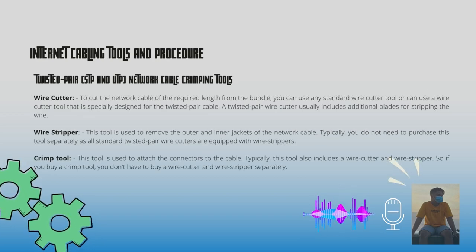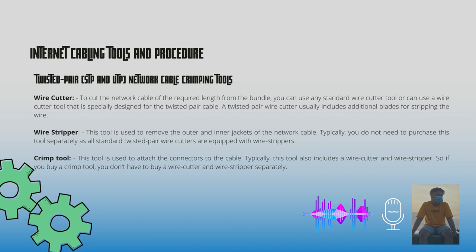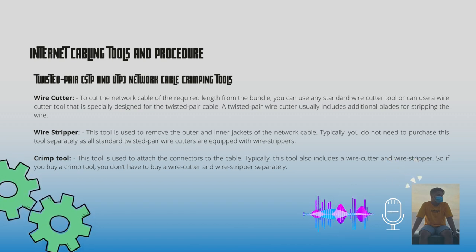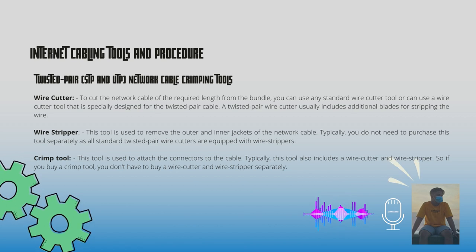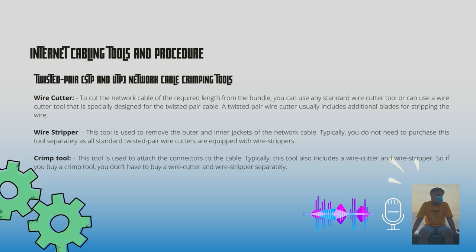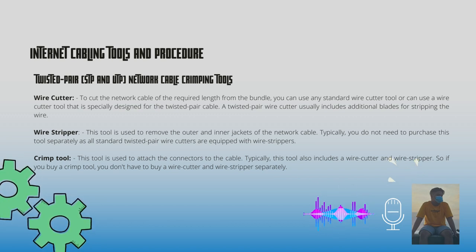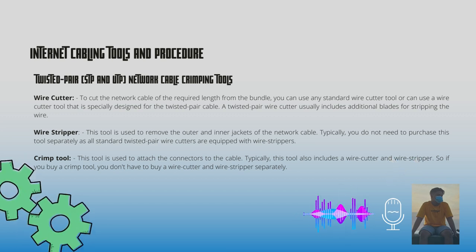A wire cutter is used to cut the network cable to the required length from the bundle. You can use any standard wire cutter or one specially designed for twisted pair cable. A twisted pair wire cutter usually includes additional blades for stripping the wire. A wire stripper is used to remove the outer and inner wire jackets of the network cable; typically you do not need to purchase this separately, as most twisted pair wire cutters are equipped with wire strippers.